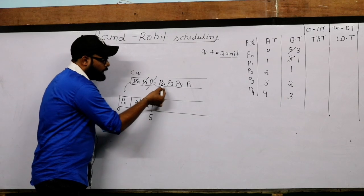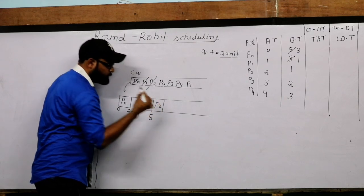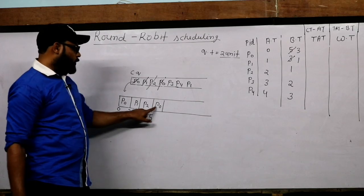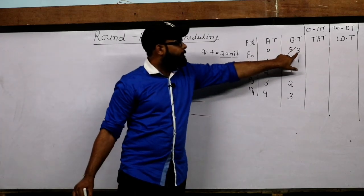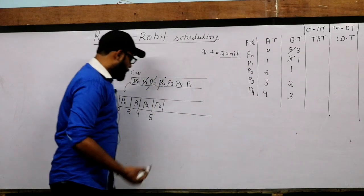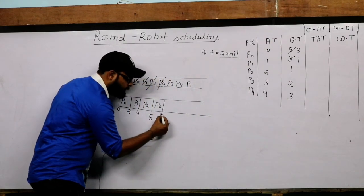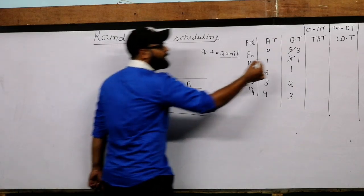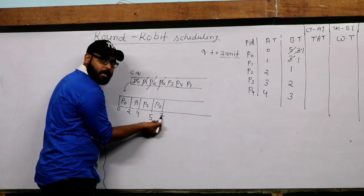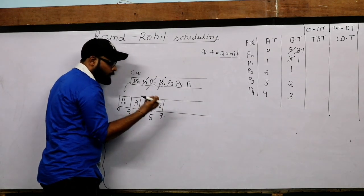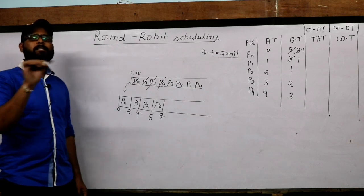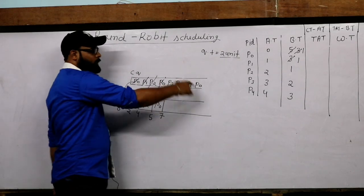Now P0 comes again, assigned from the circular queue into the Gantt chart. P0's remaining burst time is 3 and quantum is 2, so it executes 2 units — from 5 to 7. After executing 2 units, the remaining burst time for P0 is 1 (3 minus 2 = 1). P0 goes back into the circular queue to execute next time.